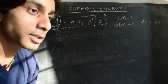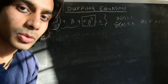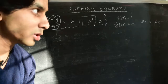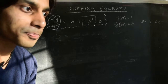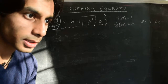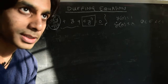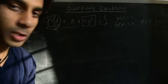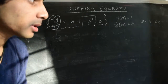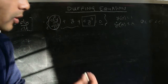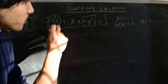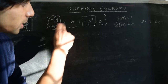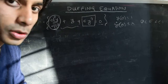Hi there. In the previous parts of the videos, we have been talking about the Duffing equation with an eye towards introducing the method of multiscale expansions. Just as a reminder, the Duffing equation is a second order nonlinear differential equation of the form d²y/dt² plus y plus epsilon y³ equals 0.